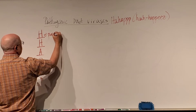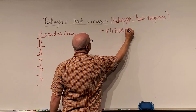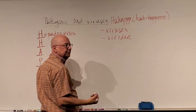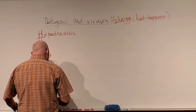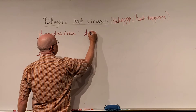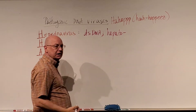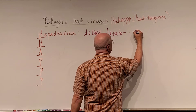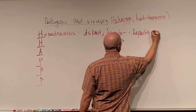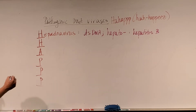The first H is Hepadnaviruses (also called Hepadnaviridae). They are double-stranded DNA viruses. If you think of anatomy and physiology, 'hepato' means liver — like hepatotoxin or hepatic artery. Hepadnaviruses can cause hepatitis; one particular type they cause is hepatitis B.